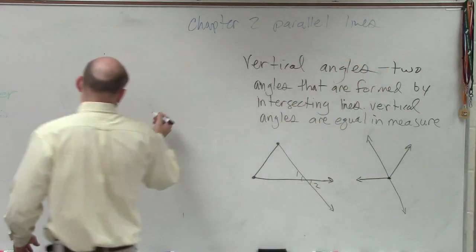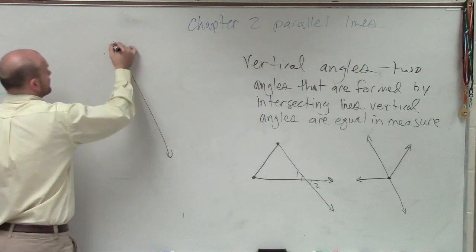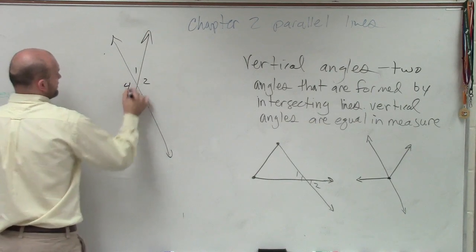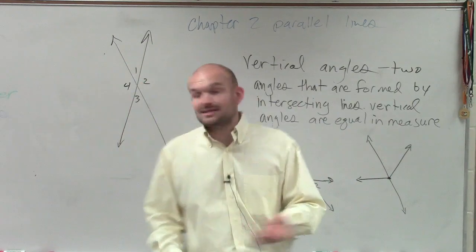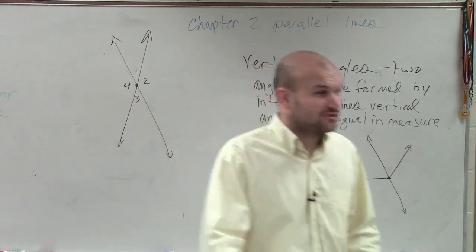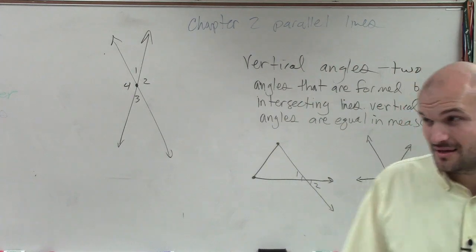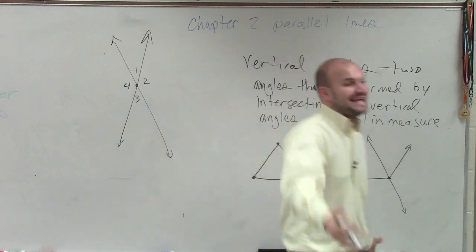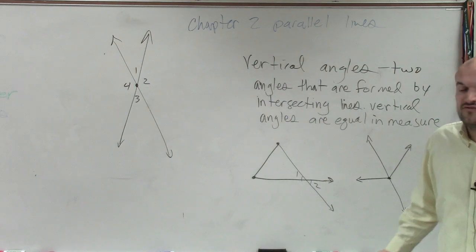Now, we have one, two, three, four, right? When I intersect lines, I just created four angles. Yes, did everybody see that? I just took two lines, and I intersected them, and now I just created four angles.